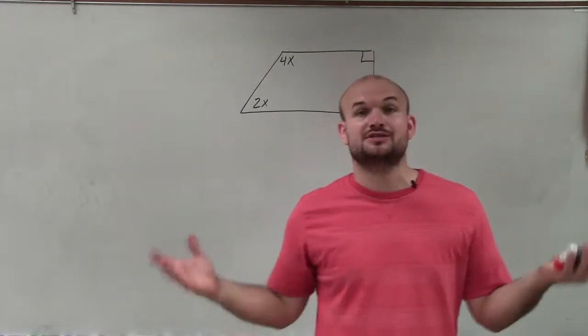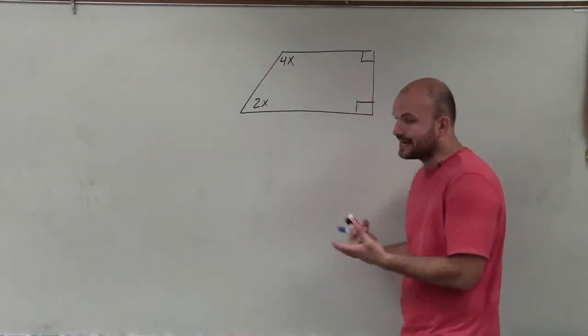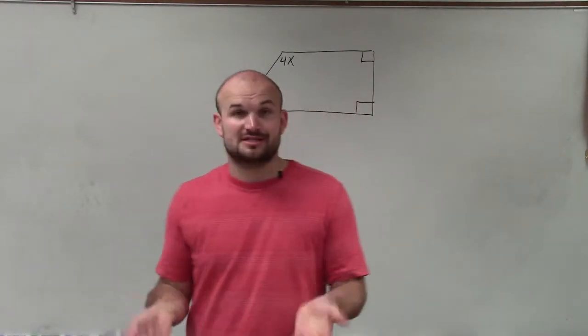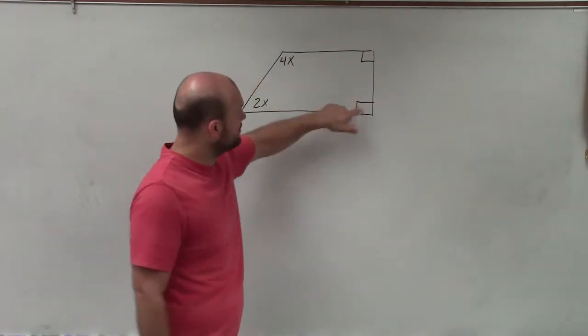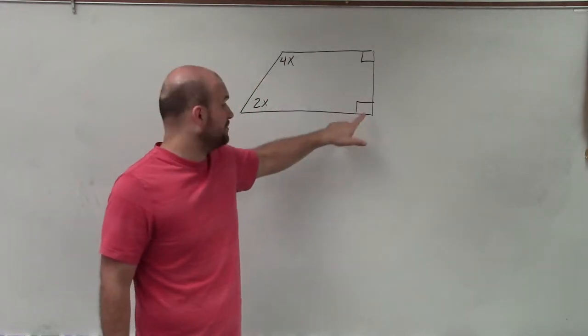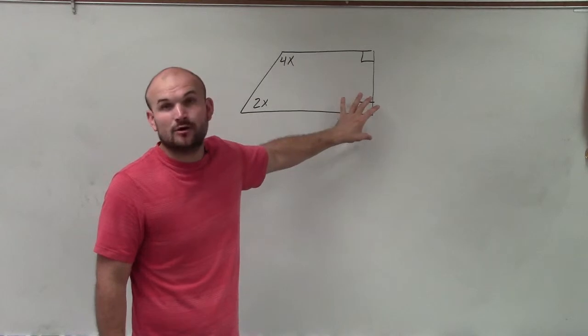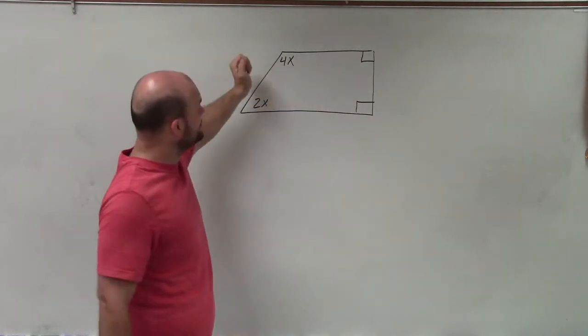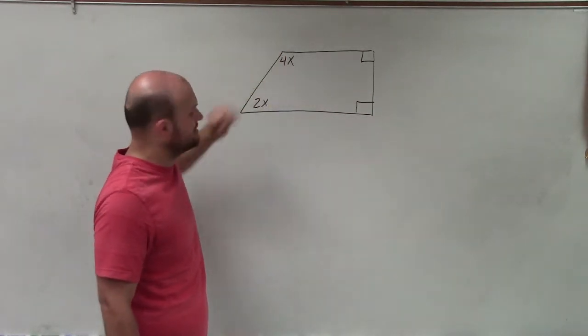Welcome. All right, so what I like to do is show you how to solve for x when we're given a polygon and we have these expressions for the angles. First of all, we see that we have two 90-degree angles, right? So when we have the box, that represents the angle measure of 90 degrees. Then we have these two expressions where this angle is 4x and this angle is 2x.